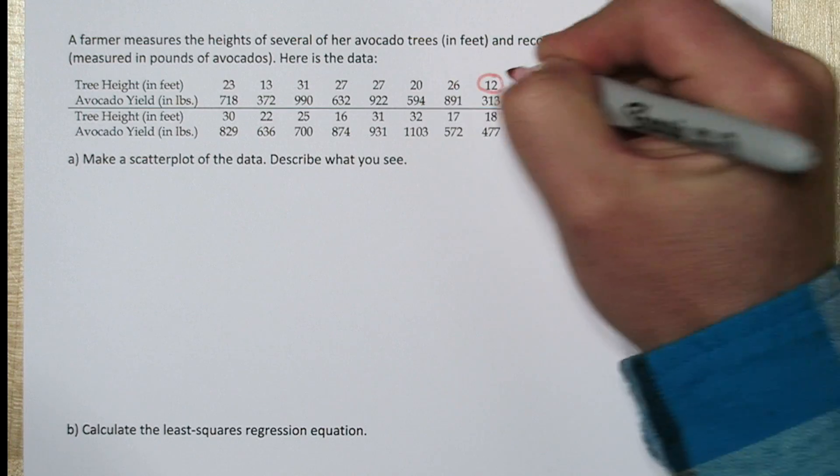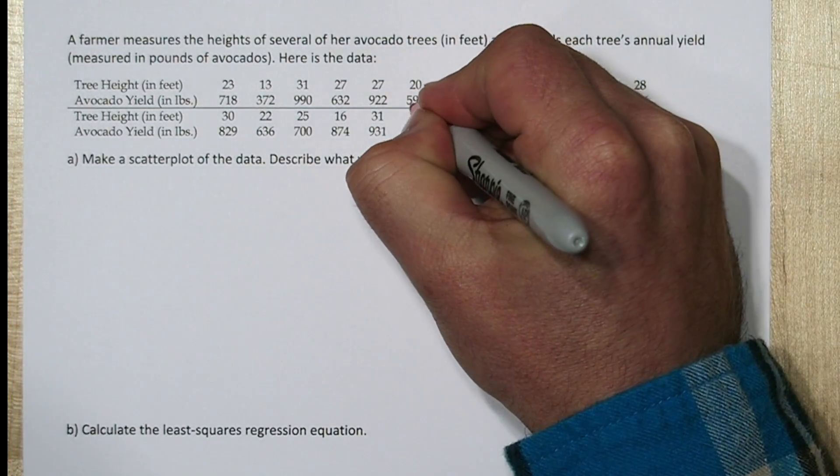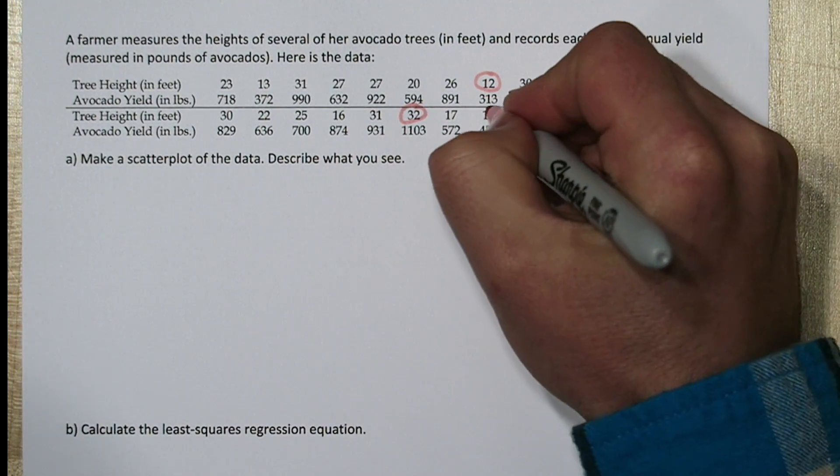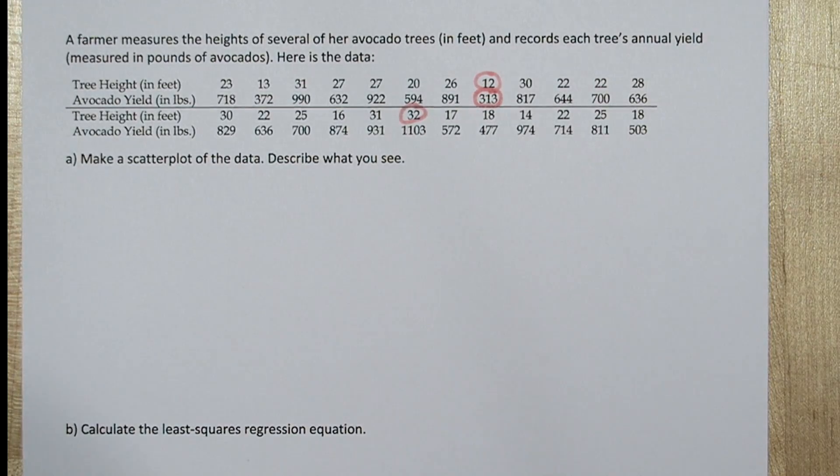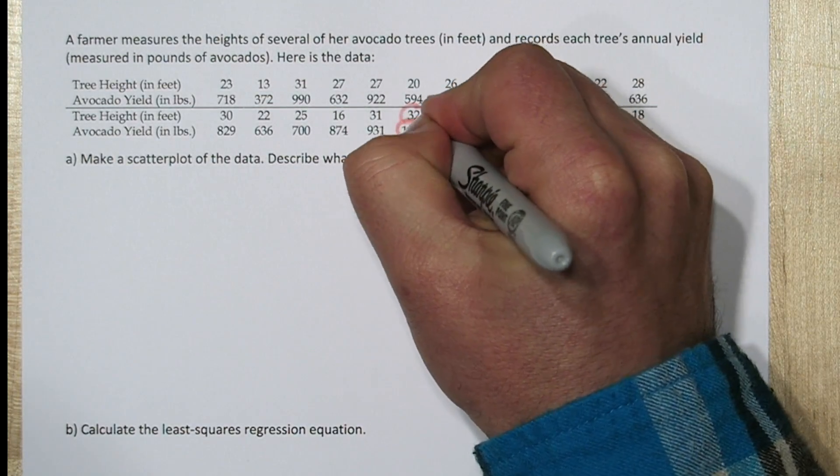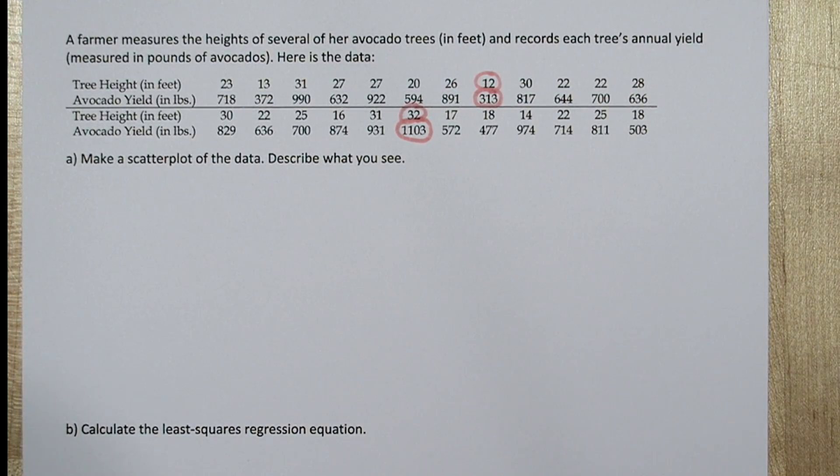So our minimum tree height was 12, and our maximum tree height was 32, and our minimum yield was 313, and our maximum yield was 1103.